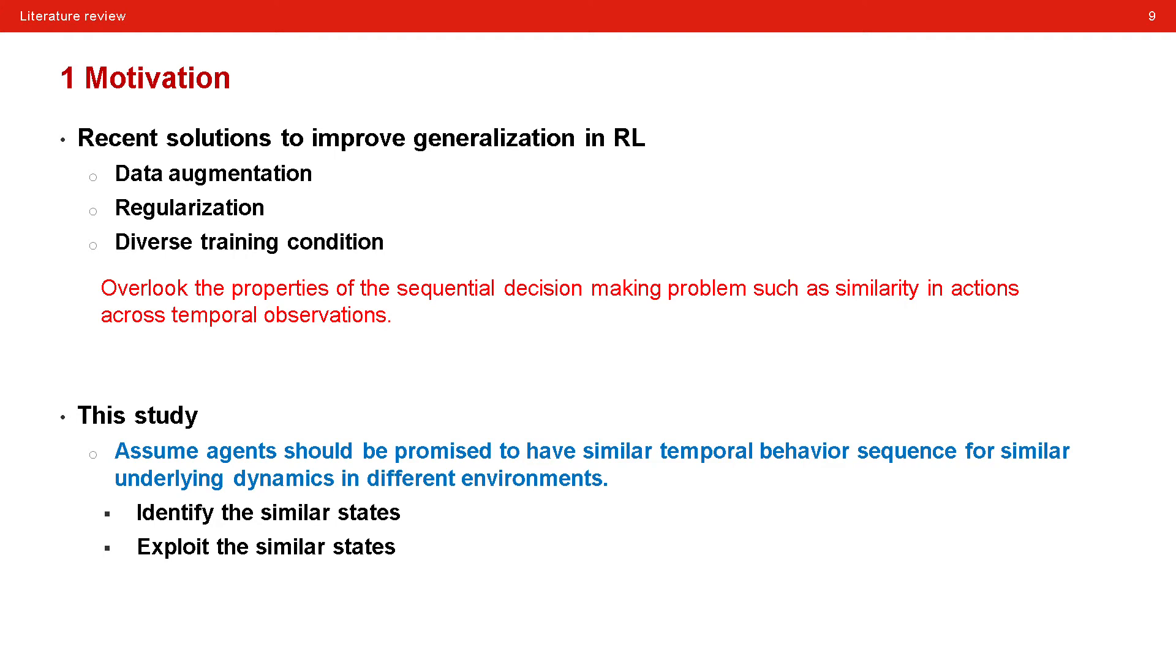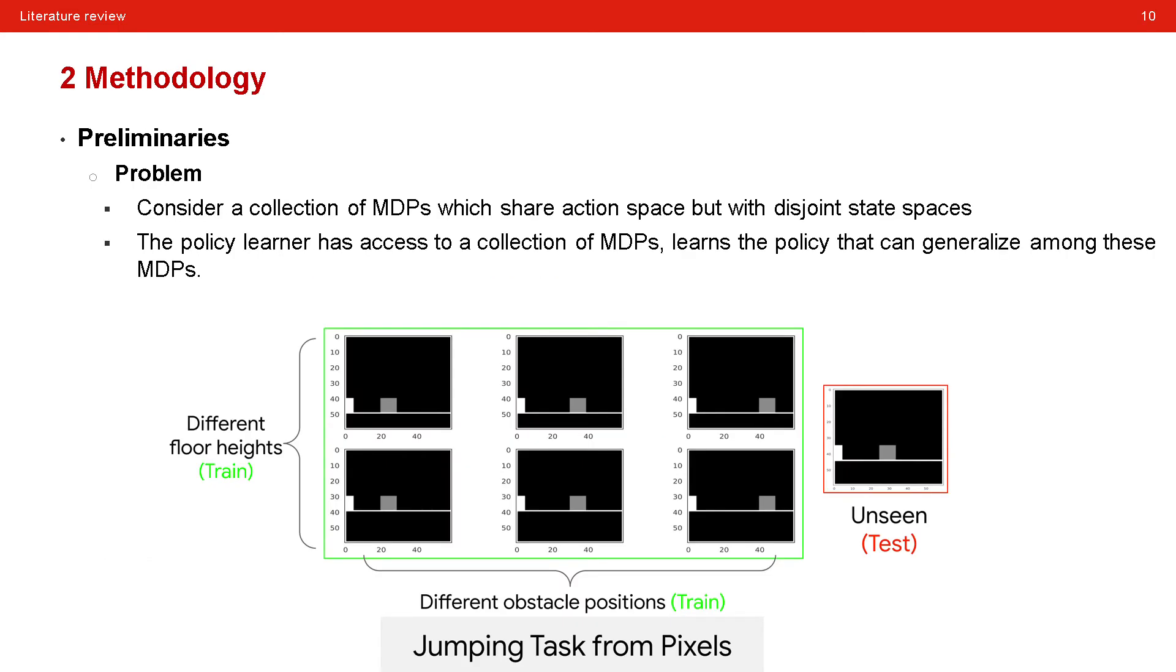Before we go through the methodology, we have a look at the preliminaries, including the problem they consider and the tools they will use. Actually, they consider a collection of Markov decision processes which share the action space but with different state space. And the policy learner has access to a collection of Markov decision processes and it learns the policy that can generalize among those Markov decision processes. In other words, they are studying a generalization problem of reinforcement learning over different state space.